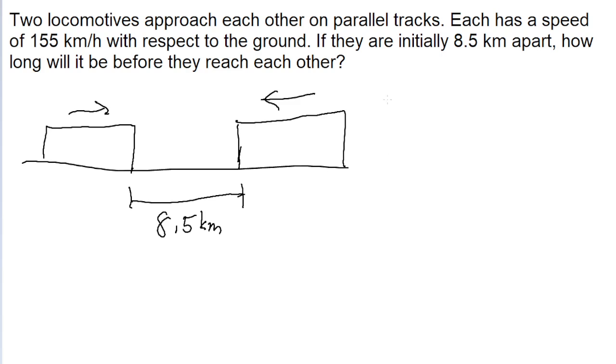So really, all we need to do is take our speed equation, v equals d over t, and then use this to find the amount of time it takes for one of the locomotives to travel half of 8.5 kilometers.